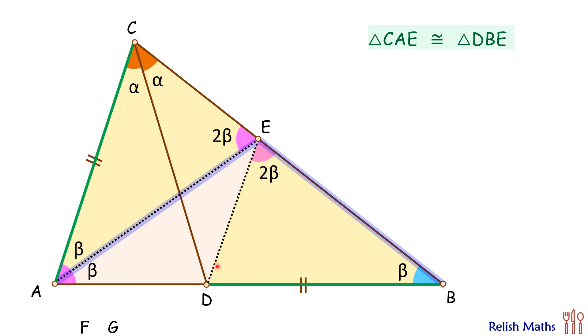And this angle D here, again by corresponding parts, this angle D is equal to angle C here, or this angle D is equal to 2 alpha. Also by corresponding parts, we can say that the side length for triangle CAE, the side length EC, will be equal to the side length ED of the other triangle.